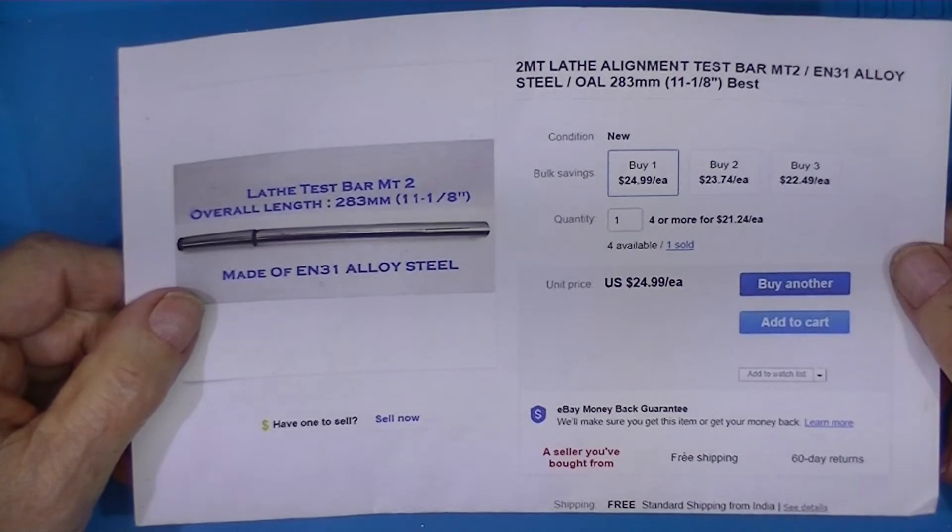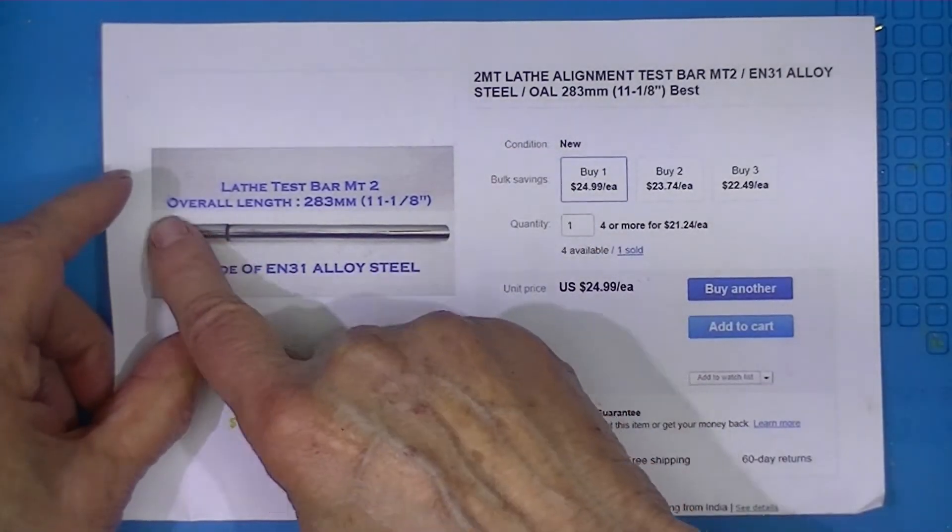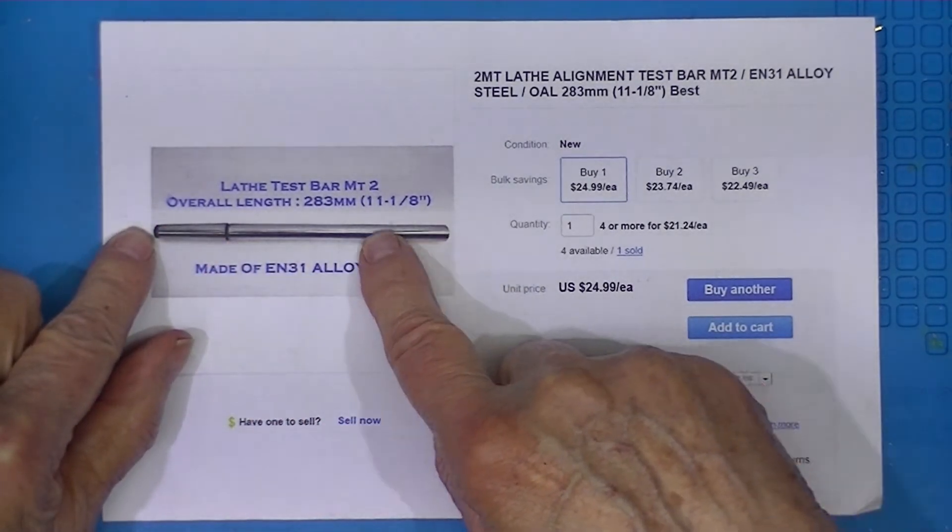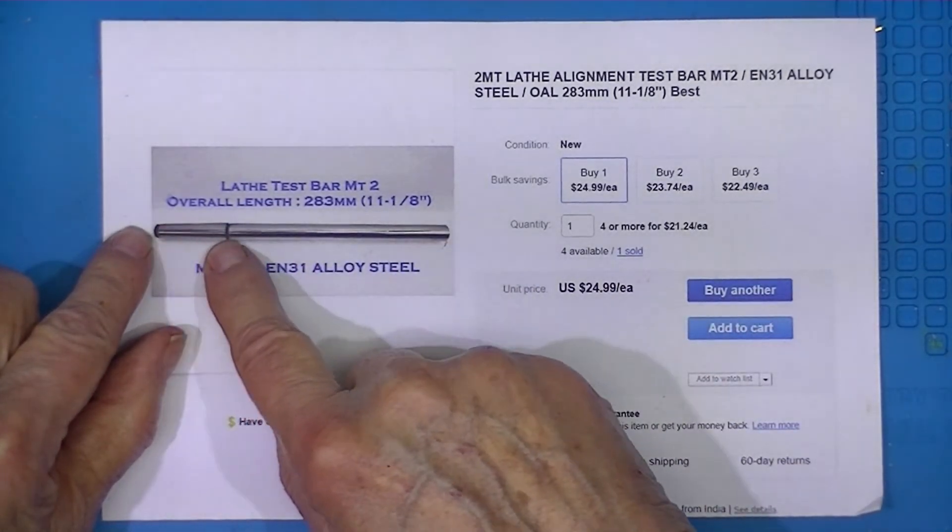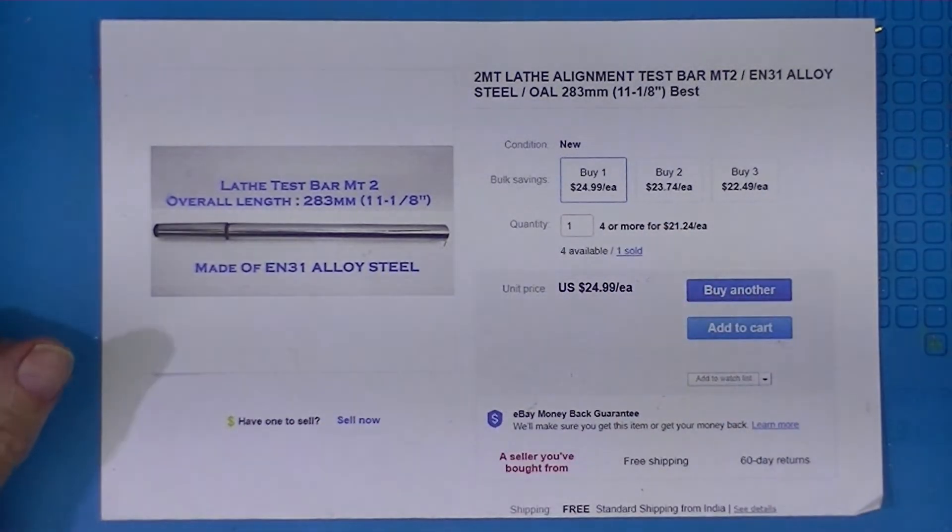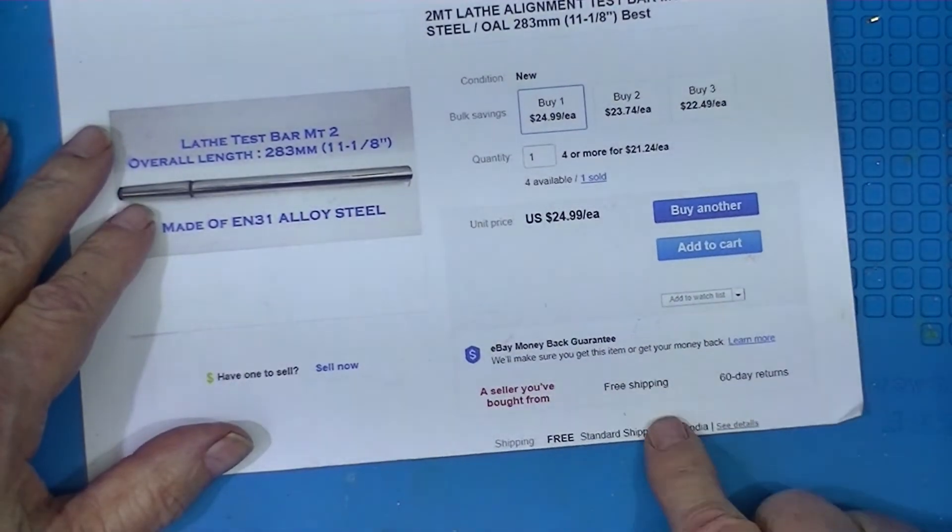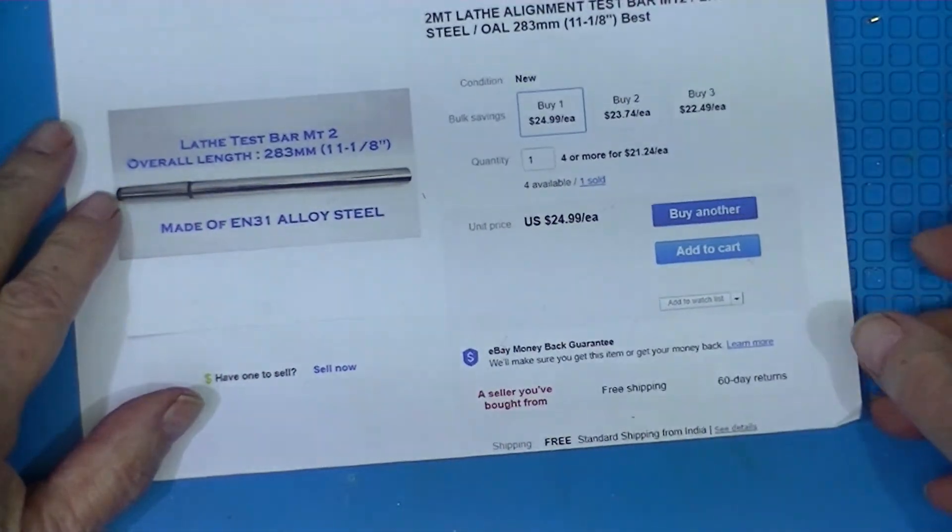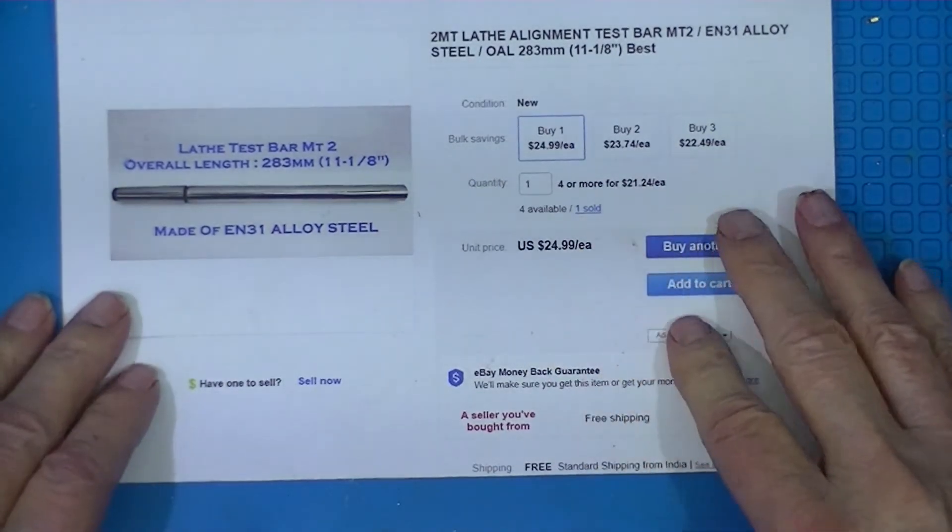Here's an alignment bar. One end is number two Morse taper. Both ends are centered. The bar was ground, the straight part of the bar and the Morse taper were ground between centers, I think. This came from India. There are lots and lots of these identical bars from India on eBay. I didn't even get the seller's name on this.